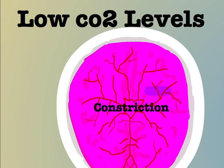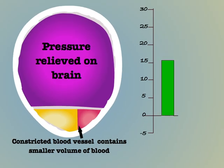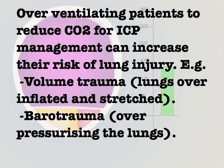With ventilated patients we can use this effect to our advantage when attempting to reduce pressures in the brain. Using the ventilator we can reduce CO2 levels in the bloodstream, promoting vasoconstriction. These constricted blood vessels carry a smaller volume of blood and ICP is reduced. However, CO2 management can be a very effective method for controlling raised intracranial pressures but it's not without its risks. Overworking a patient's lungs with the ventilator in order to drive down CO2 can risk damaging them, potentially seriously.